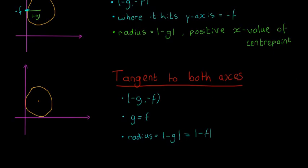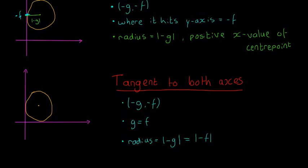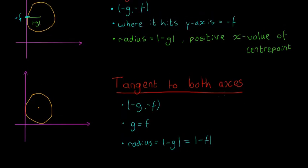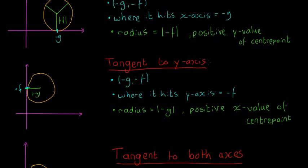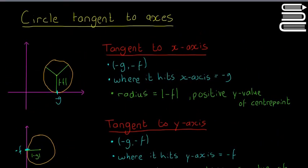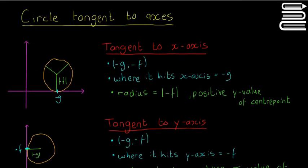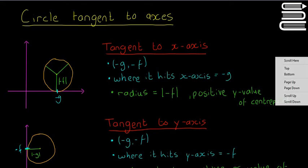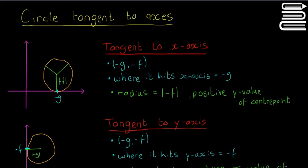That's it for this video. We looked at three cases: when a circle is tangent to both axes, tangent to the y-axis, and tangent to the x-axis. In the next two videos we'll do examples using these rules — the next video will be an easier example and the last one will be quite a difficult example — so make sure to watch on so you know exactly how to use these in a problem.